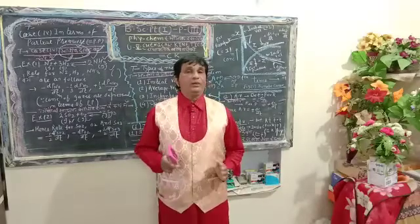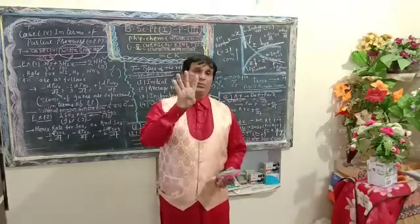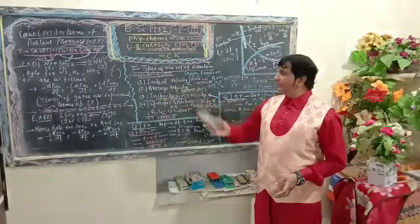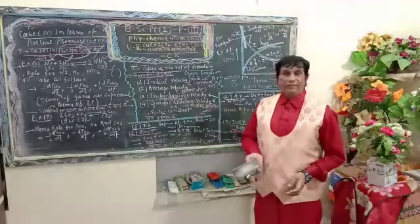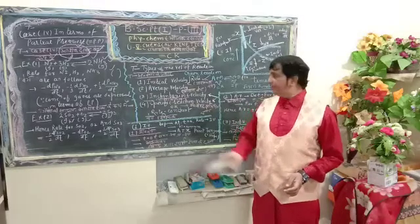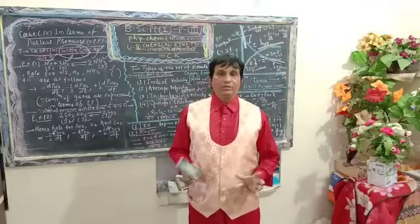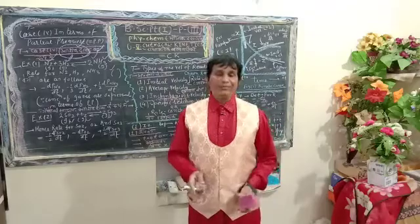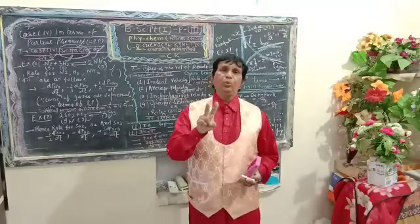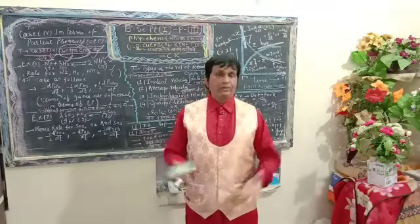Today I will deliver what are the kinds of velocity of reactions in chemical kinetics. There are 4 types of velocity of the reaction. I have listed on the blackboard here: first, initial velocity; second, average velocity; third, instantaneous velocity; and fourth, specific reaction rate, which is also known as rate constant. Generally, students get confused about how many total types of velocity of reactions there are — students respond 2 or 3. But there are 4 types.